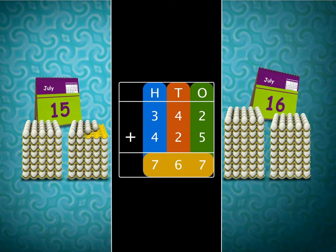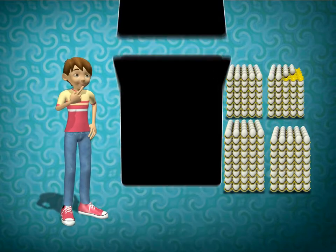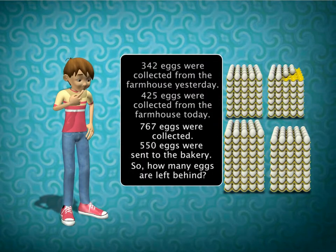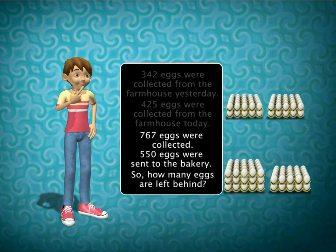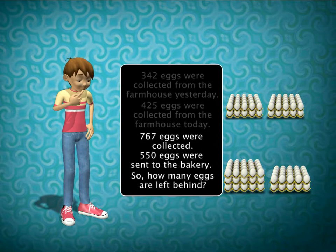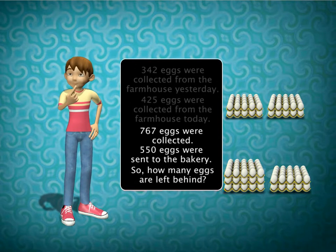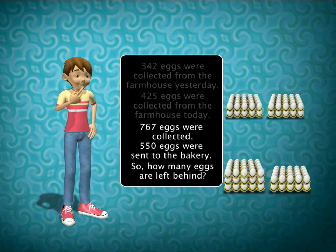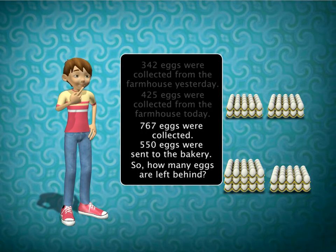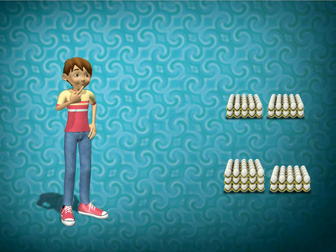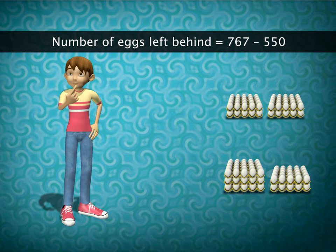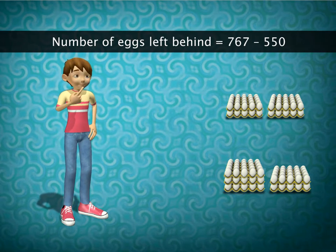Now, let's come to the second part of the problem. We know that 767 eggs were collected, out of which 550 were sent to the bakery. Now, how can we find the number of eggs left behind? By addition or subtraction? Subtraction is correct. To find the number of eggs left behind, we have to subtract 550 from 767.